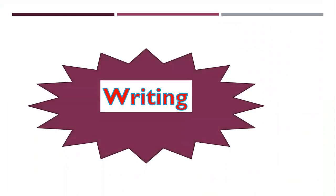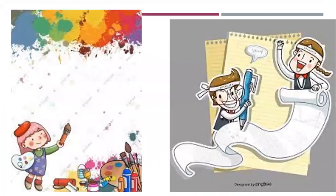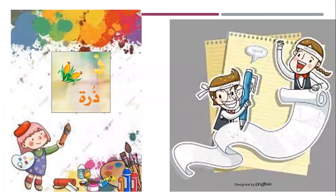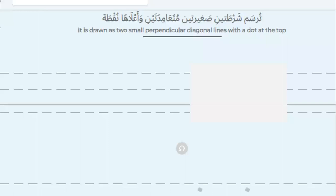Writing. Now we will practice how to write letter Zal. Let's practice the shape of Zal. It is drawn as two small perpendicular diagonal lines with a dot at the top.